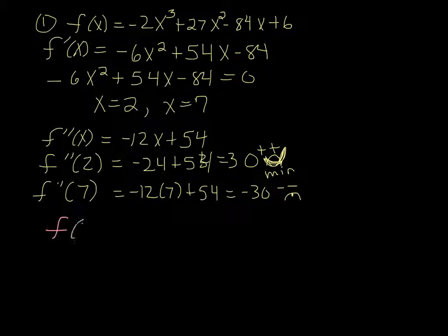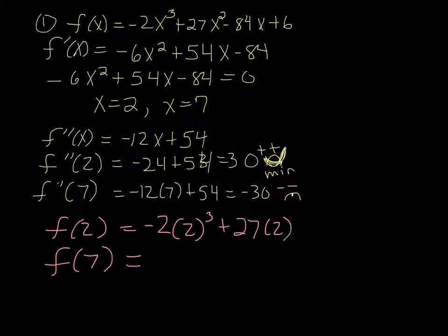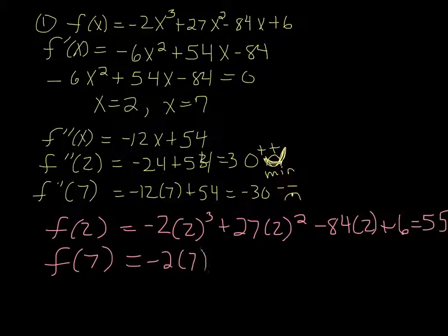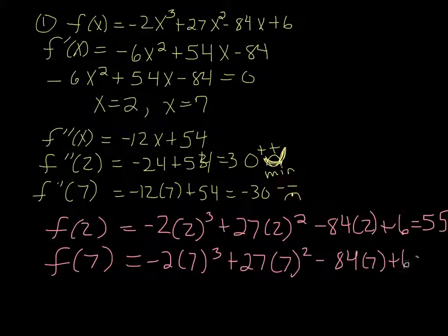We still have to find what the min and max are. And to do that, we're going to plug in 2 and 7 into the original function. So f(2) would be -2(2³) + 27(2²) - 84(2) + 6.